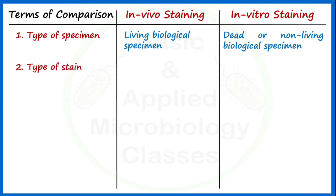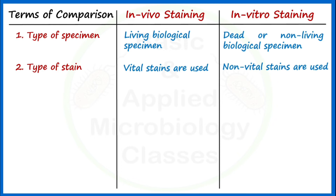The second point of difference is type of stain. Vital staining reagents are used in in vivo staining. Vital stains are staining reagents, chemicals, or dyes that are harmless to the living biological specimen being examined — their use never results in killing of the specimen. In in vitro staining, non-vital stains are used; non-vital staining reagents are chemicals or dyes which result in killing of the biological specimen under examination.